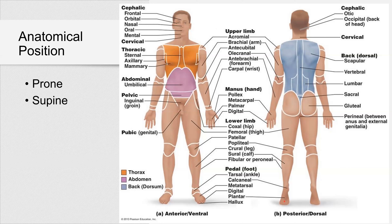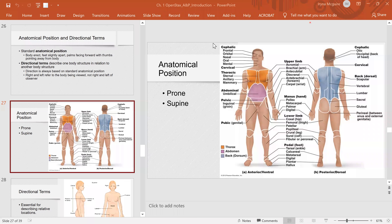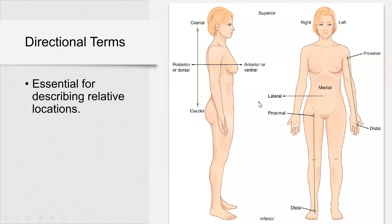Please make sure you memorize all of that terminology. Now here's our next slide, where we're talking about directional terms. Directional terms are referring to anatomical position and are essential for describing relative location.